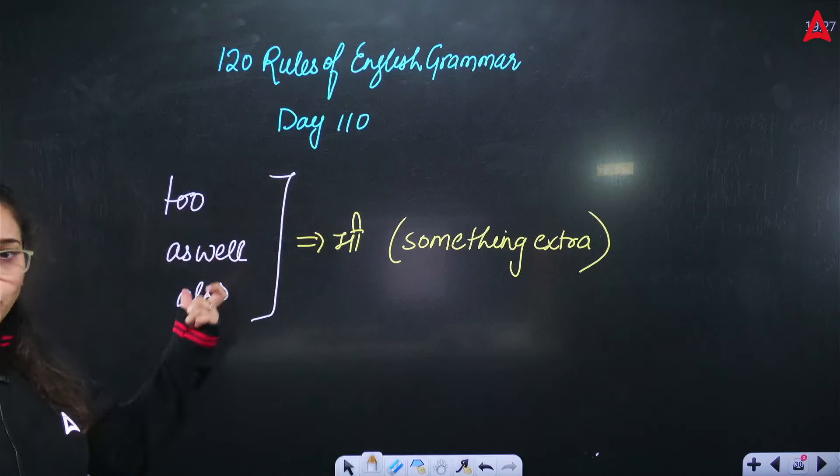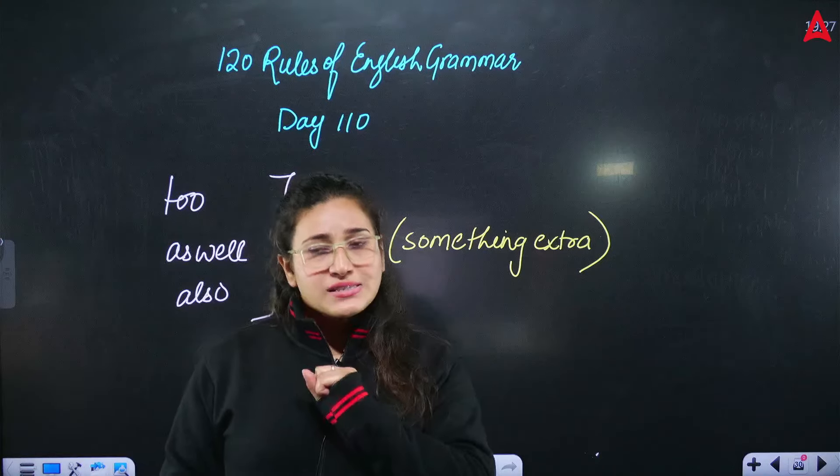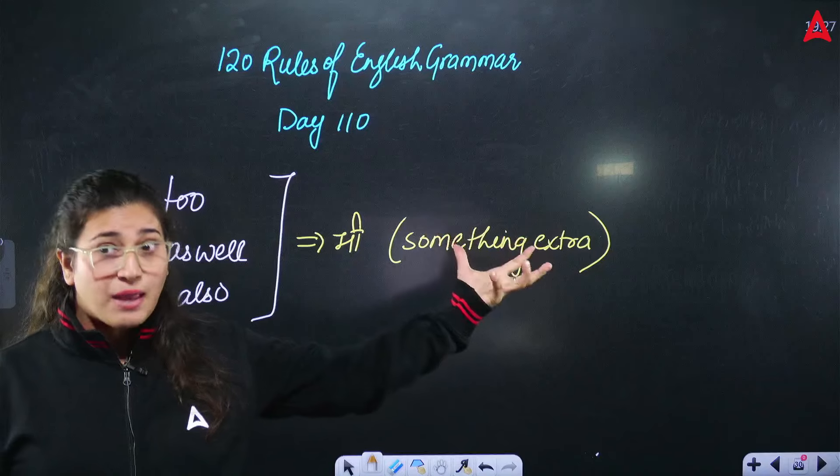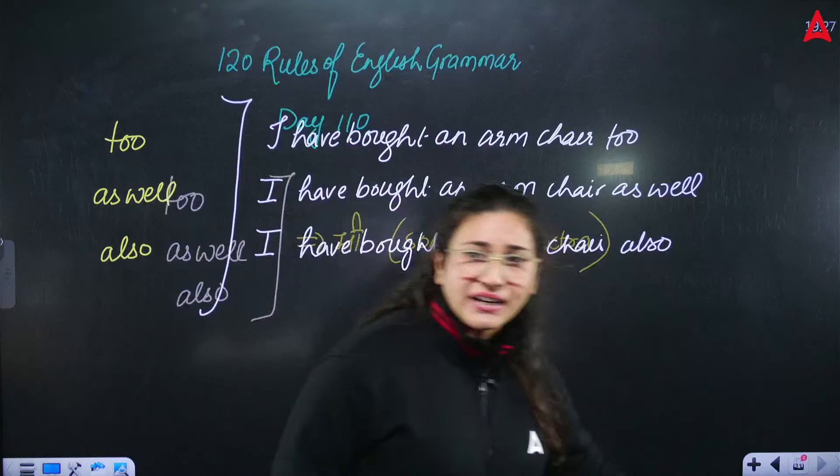So, we have three words: too, as well, and also. All of you confuse us because the meaning of the meaning is ultimately B, which means something that we have in extras. Right? So, let's see the sentences.